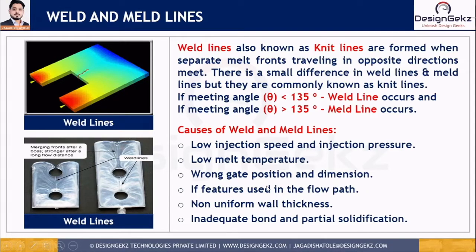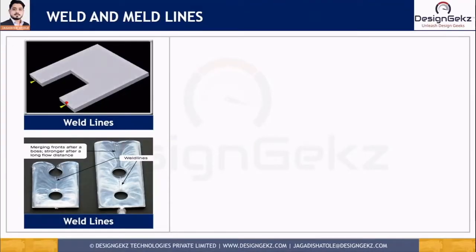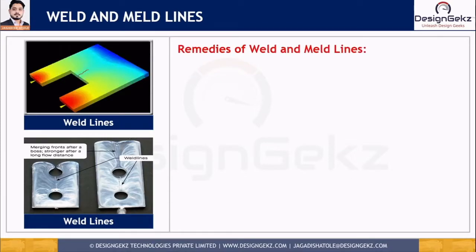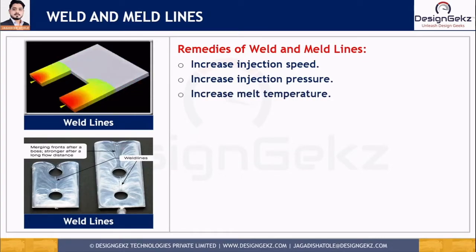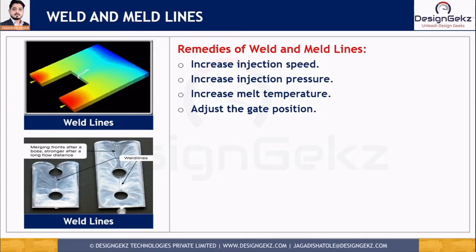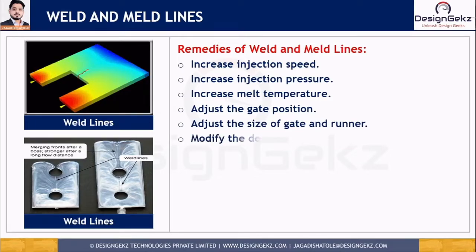If we know the causes, we can take remedial action to eliminate this neat line defect. First, by adjusting operating conditions — increasing injection speed, injection pressure, or melt temperature — we can mitigate this defect. The neat line defect can also be eliminated by modifying the mold design, such as adjusting the gate position and adjusting the size of the gate and runner so that more material is poured in a defined time.